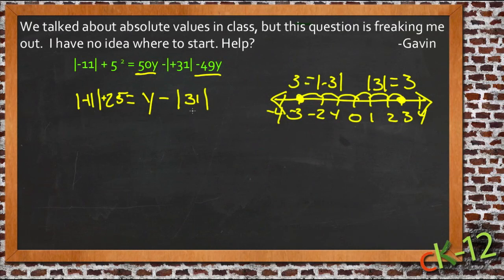So we can apply that same logic here to the two numbers we have. The absolute value of negative 11 is going to be positive 11, because if it's 11 steps to the left of zero, it's going to be 11 steps back to zero again. So now we just have 11 plus 25 on the left.